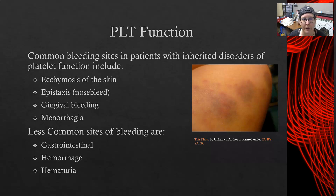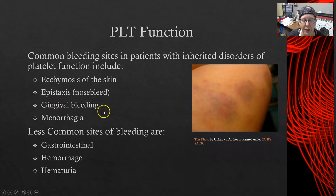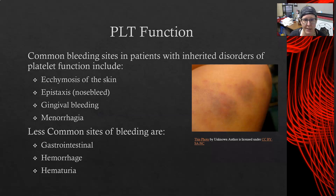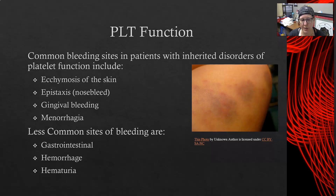Common bleeding sites in patients with inherited disorders of platelet function include ecchymosis of the skin (skin bruising, as evidenced here), epistaxis (nosebleed), gingival bleeding especially when brushing teeth, and menorrhagia (very heavy menstrual bleeding in females). Less common bleeding sites include the gastrointestinal tract, hemorrhage without a specific site, and hematuria — blood in the urine — indicating that the kidneys or bladder are bleeding.